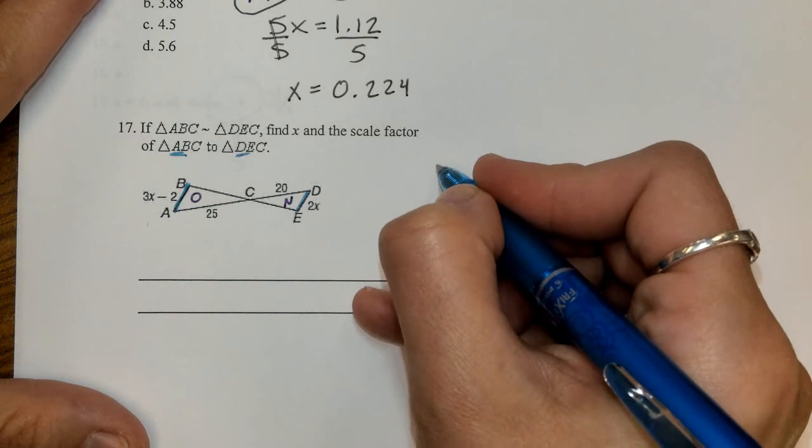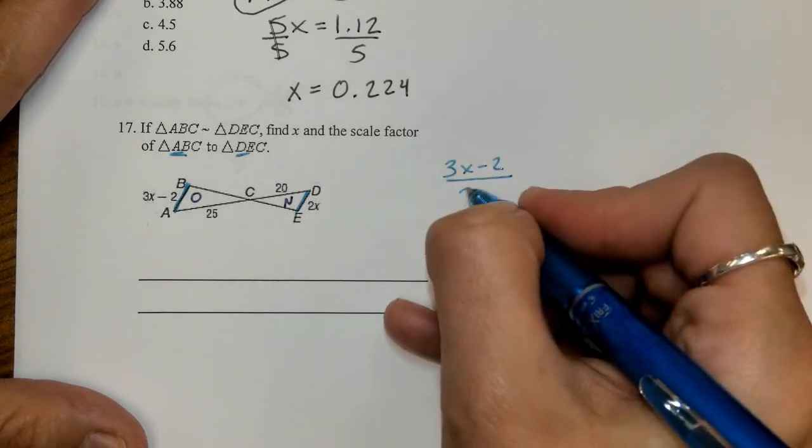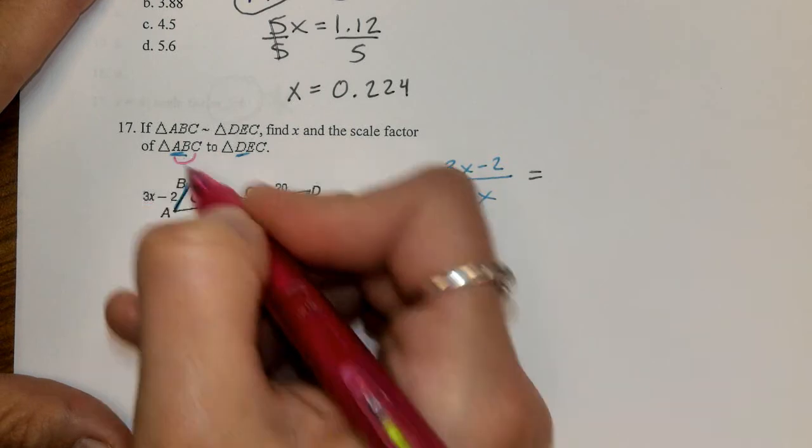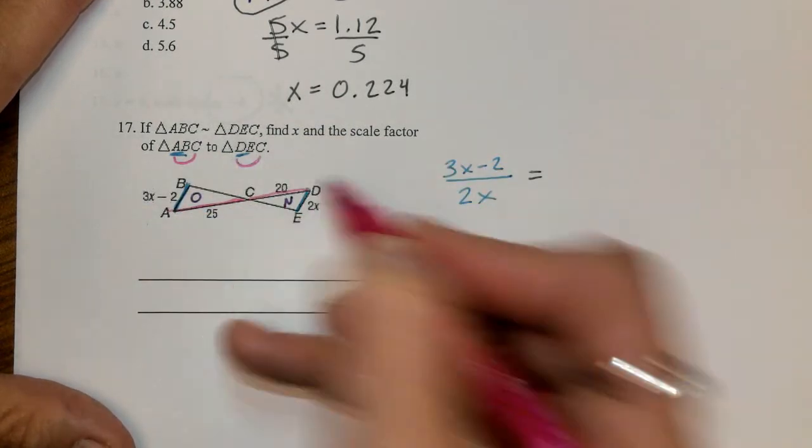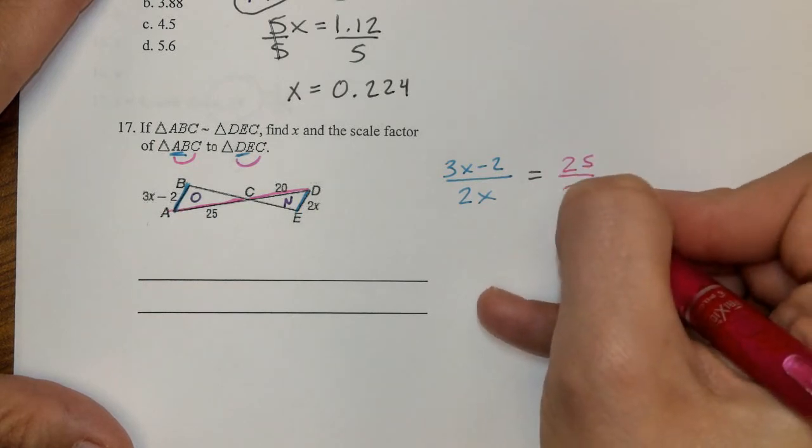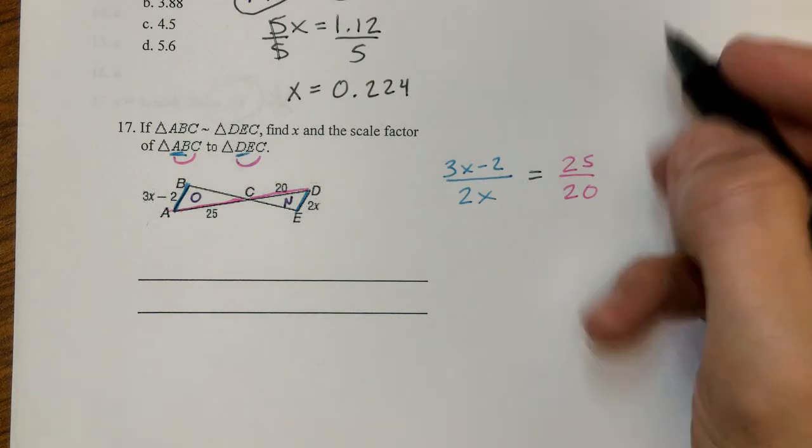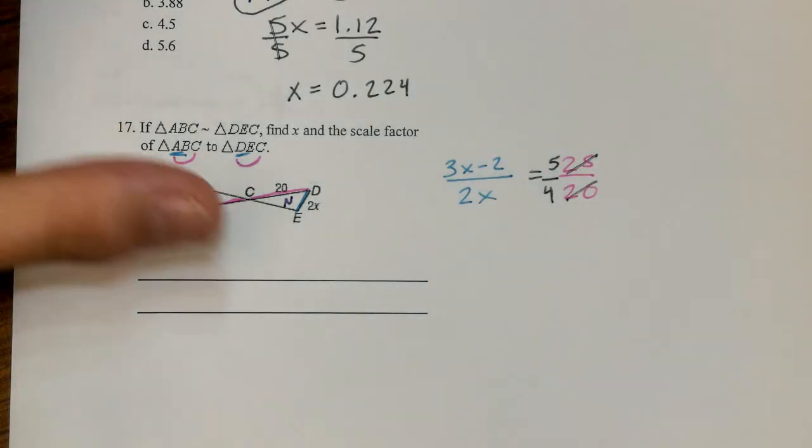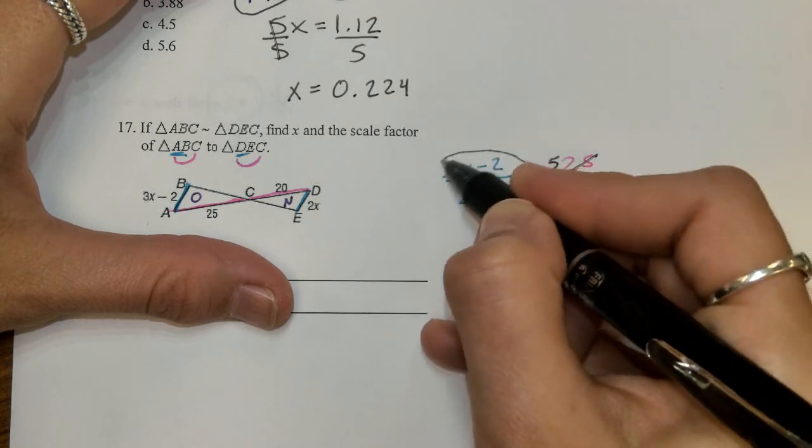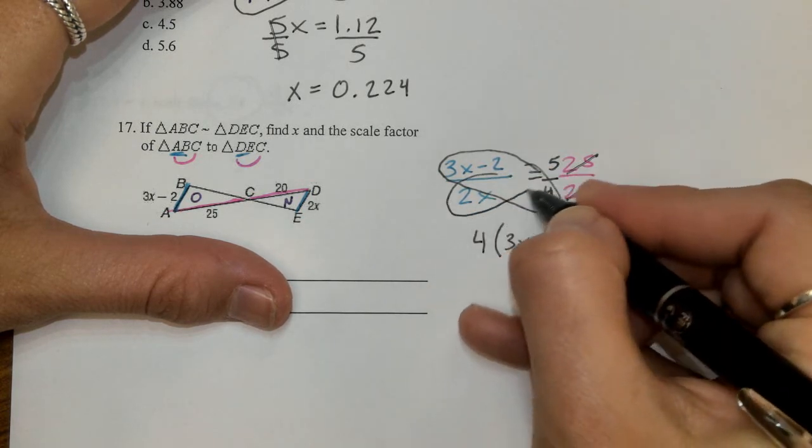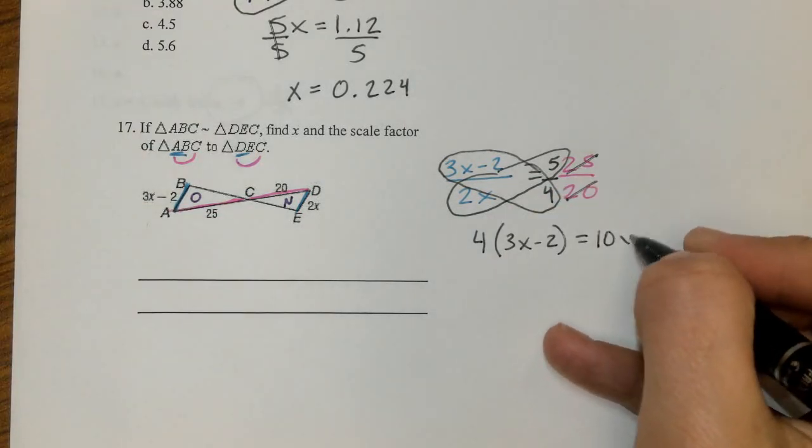So we can set up our 3X minus 2 over that 2X. We will set that equal to, find our other two sides. AC are outer two letters and DC are outer two letters. So we need to make sure that we keep that 25 on top and we have the 20 on bottom. I'm simplifying. I don't want to deal with these huge numbers. We can simplify this to 5 over 4. So let's go ahead and start this out. We're going to multiply. I now have 4 times 3X minus 2 set equal to 5 times 2X, so just give me 10X.